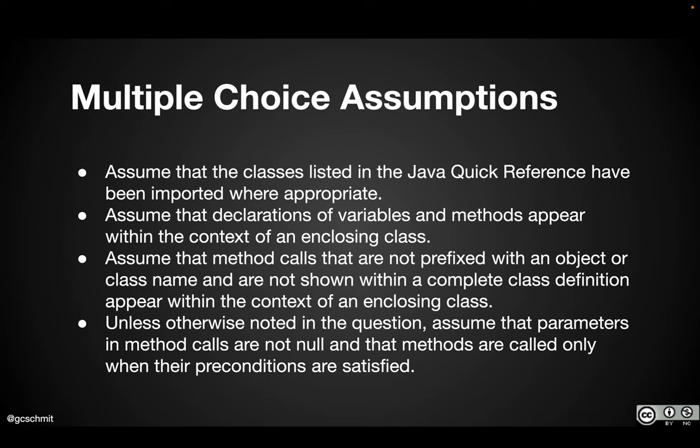Here's an important one. Unless it is otherwise noted in the question, and occasionally it is, usually it is not, you can assume that the parameters in the method calls are not null and the methods are called only when the preconditions are satisfied. These are all reasonable assumptions to make and I guess if I were to sum up all four of these bullet points it would be that they're not trying to trick you on the multiple choice. They're trying to assess if you understand the key learning objectives that are defined. So just keep that in mind. Don't overthink these questions.